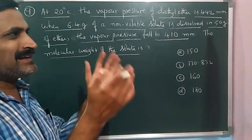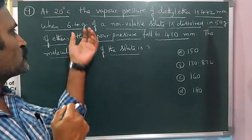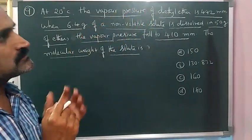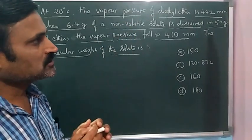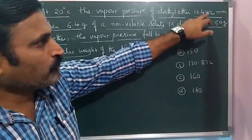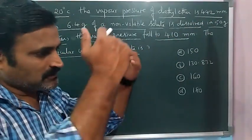So in this entire question, what we observe is whenever a non-volatile solute is added to diethyl ether, its vapor pressure reduced from 442 to 410 millimeters.